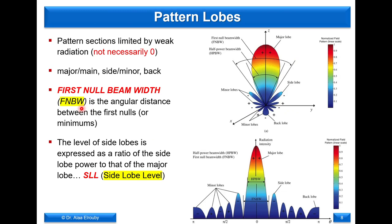The radiation pattern has a main lobe, side lobes, and a back lobe — their names indicate their meaning. Another parameter is the first null beam width, which is the angle between the first minima on each side starting from the peak. The null doesn't need to be exactly zero; it can be the minimum. The side lobe level is the ratio of the peak of the side lobe compared to the peak of the main lobe.